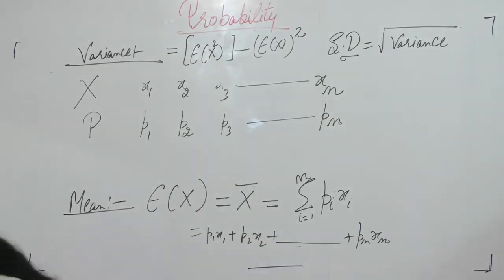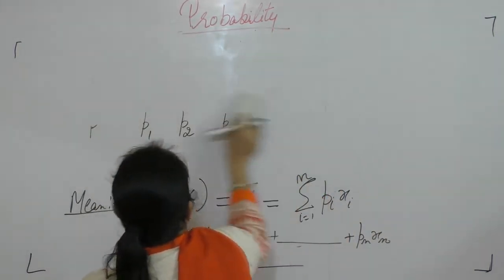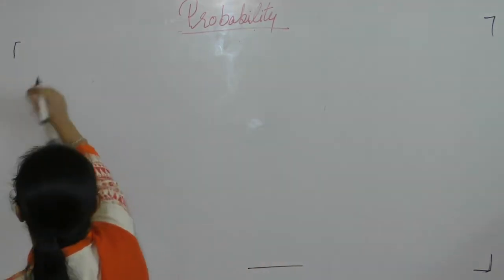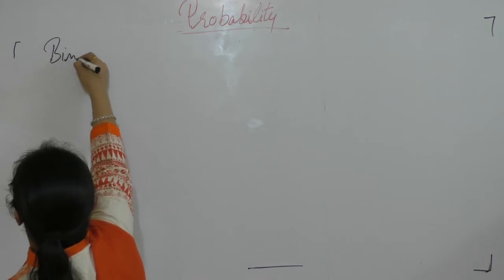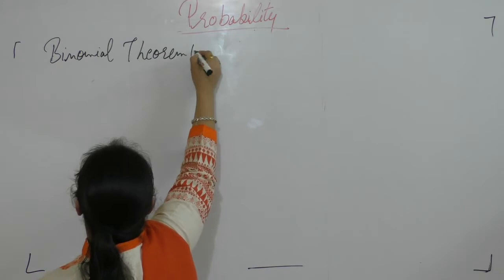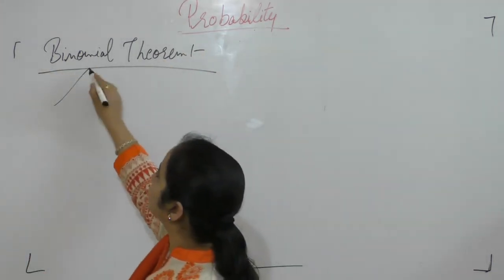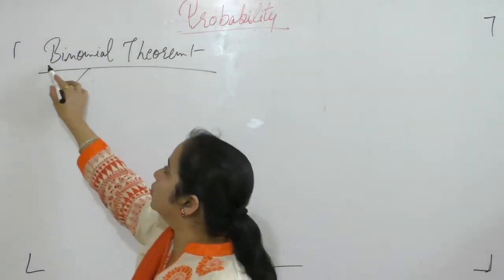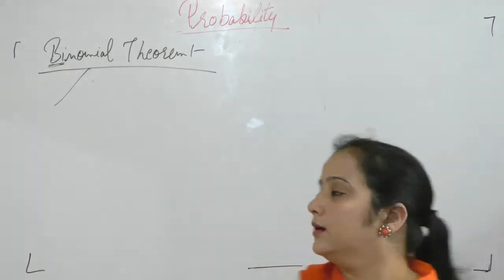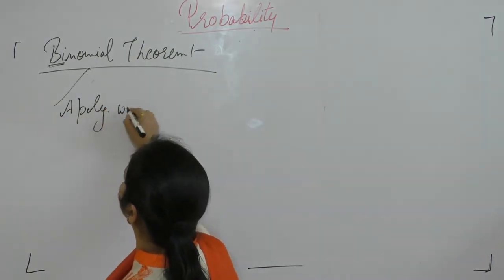Now the next topic is the binomial theorem. First, let us look at what binomial means. 'Bi' means two. A polynomial with two terms is called a binomial. So binomial theorem deals with a polynomial that has two terms.